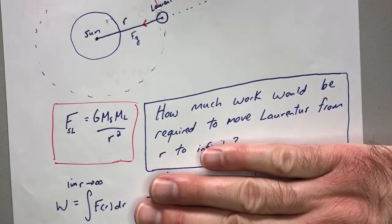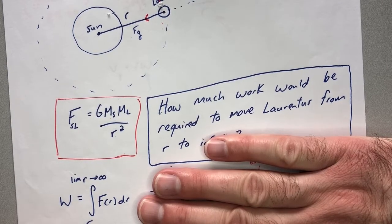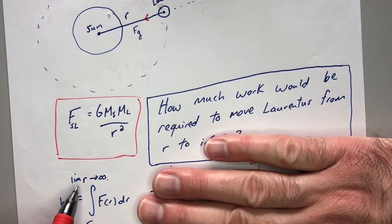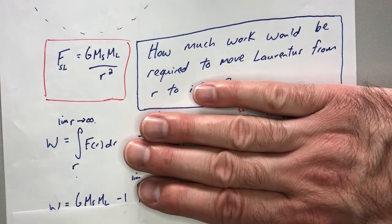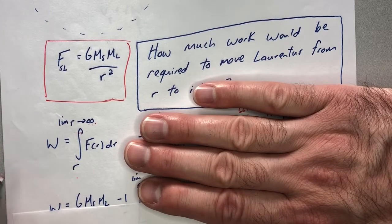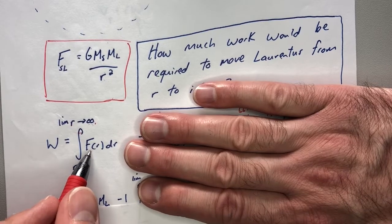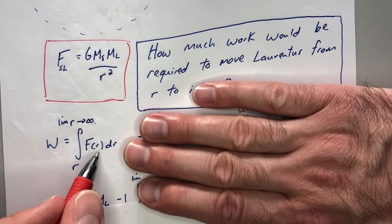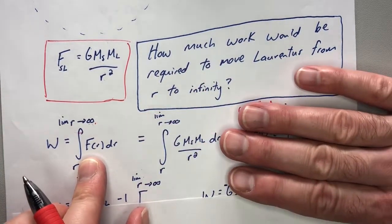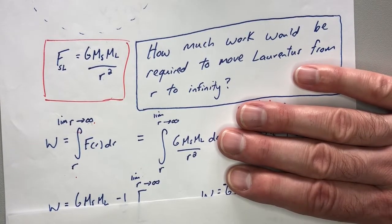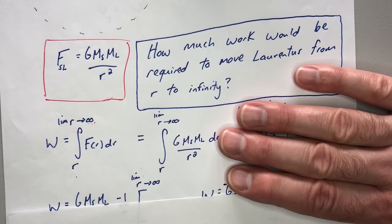We're going to define the work to move it from R to some R at infinity — really the limit as R goes toward infinity. On the AP test, if you get a tough question like this, you need to find work by integrating force with respect to position. That's all we're doing. The R's are there because we're in radial coordinates. The force acting between these two objects is just the force of gravity, so you plug that in.